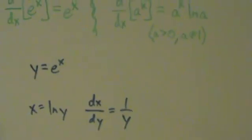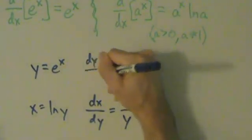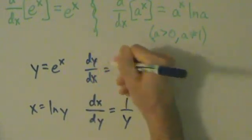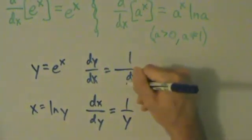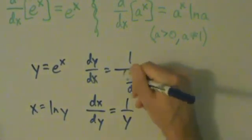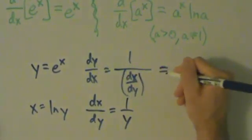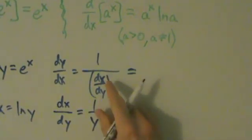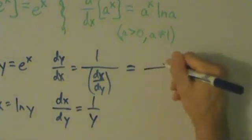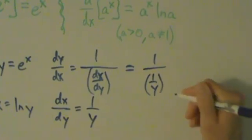So if we come up here, we have dy dx equals 1 over dx dy. And so that's our inverse function theorem, and we know dx dy, it's 1 over y, right?